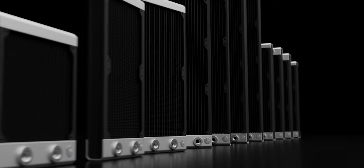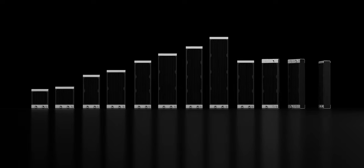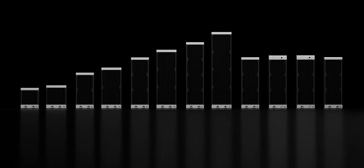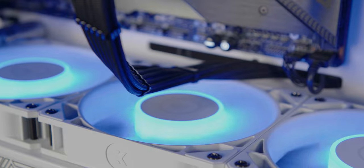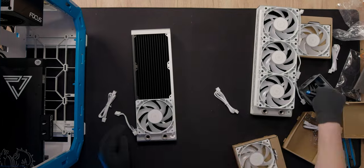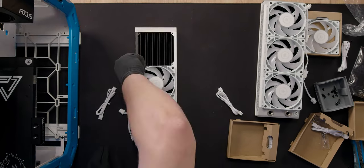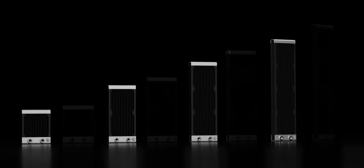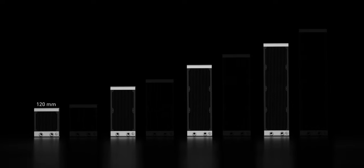Now that you know what a radiator is and its role in a liquid cooling loop, we can talk about the sizes they come in. Since cooling fans are necessary to push air through the radiator and must be attached to the radiator frame, the radiator size is naturally dictated by the standard fan sizes — those are 120 mm and 140 mm. This means a radiator can come in increments: 120, 240, 360, and even 480 mm when it accommodates four 120 mm fans.